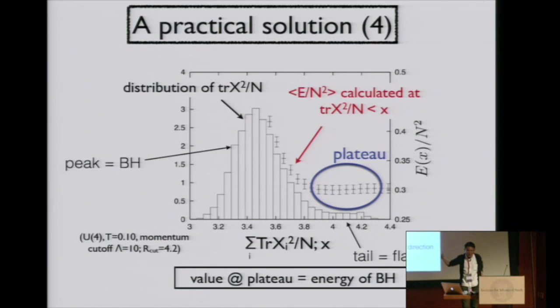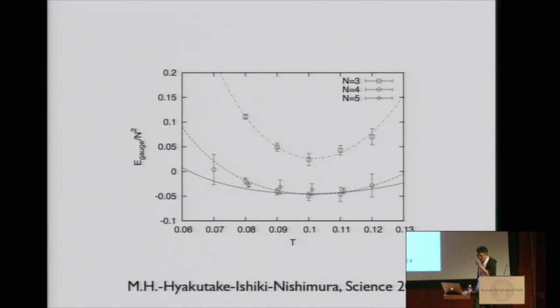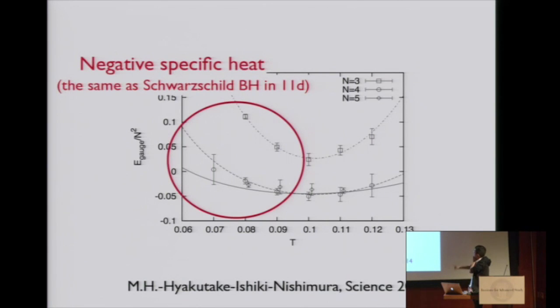We just assume that the value at plateau is the energy of black hole. This is simply a working hypothesis, and I don't know how to justify it theoretically, but I think it's a reasonable assumption. This is the result. We studied here around 0.1, for n equals 3, 4, and 5. Here we observe negative specific heat.